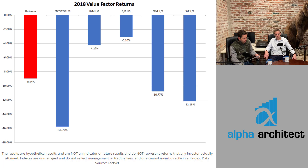I used five measures of value. As you can see in picture one in the post, basically every single value long-short portfolio unfortunately underperformed or had a negative return in 2018. So no matter how you measured value, even if you did it in a long-short manner, you would have had a negative return. I looked at it by enterprise multiples — EBIT to total enterprise value — book to market, earnings yield which is the inverse of PE, cash flow to price, and sales to price.